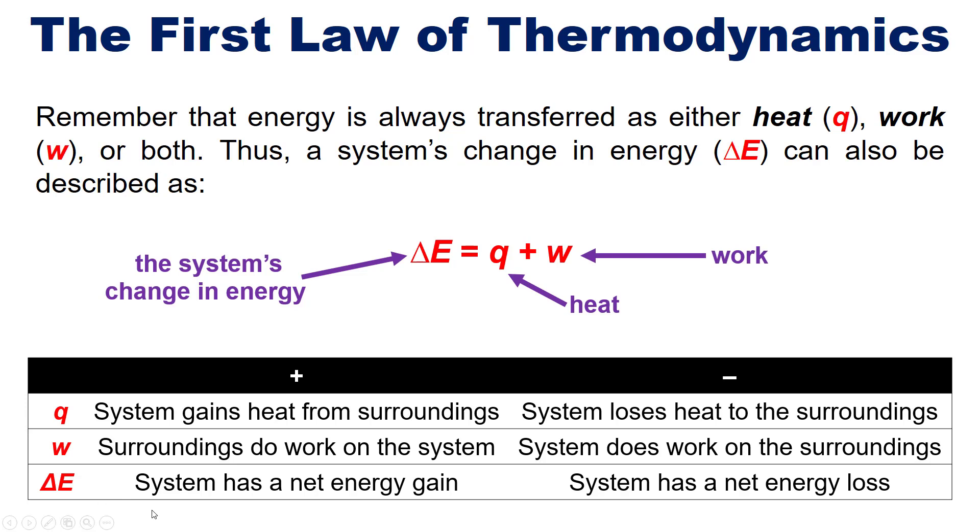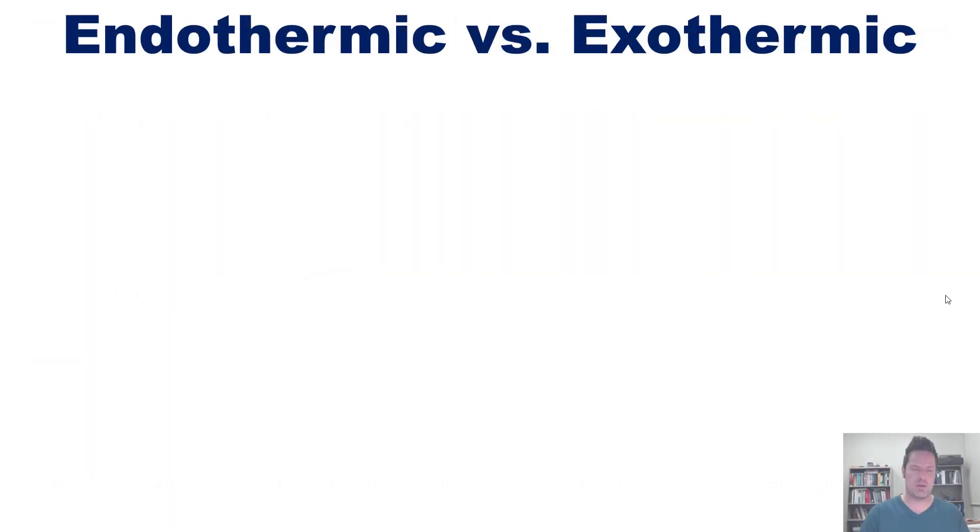Ergo, a positive delta E implies that the system has a net energy gain, while a negative delta E implies that the system has a net energy loss. And as it turns out, we have beautiful terms for both of these, endothermic and exothermic.